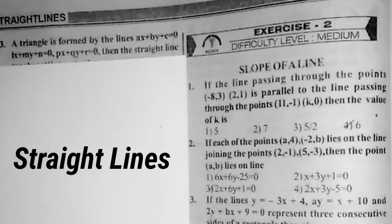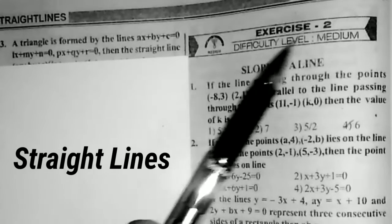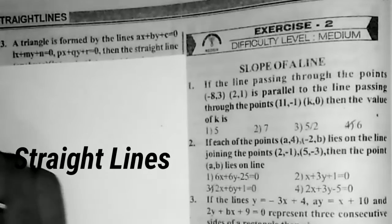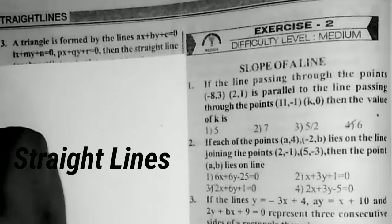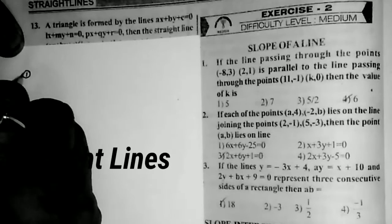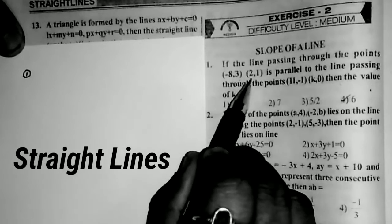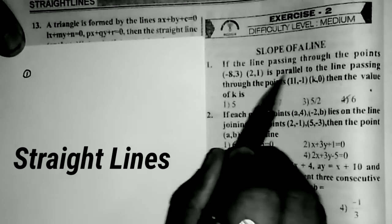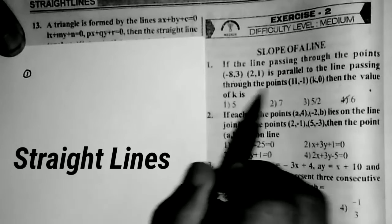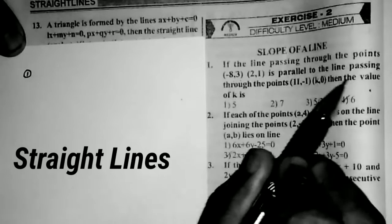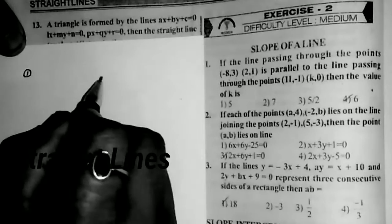In this video, we start the chapter Straight Lines. This is Exercise 2, difficulty level medium, Straight Lines MZ problems. The first problem: if the slope of the line passing through the points (−8, 3) and (2, 1) is parallel to the line through the points (11, −1) and (k, 0), then what is the value of k?